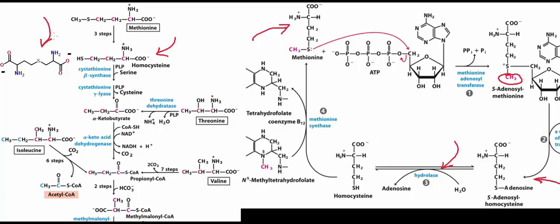Alpha-ketobutyrate is the convergence point between methionine catabolism and threonine catabolism. Threonine catabolism begins with threonine dehydratase — keep in mind we've already seen one mode of threonine catabolism in a previous video involving threonine dehydrogenase; make sure you can distinguish between the two. Threonine dehydratase specifically converts threonine to alpha-ketobutyrate. Alpha-ketobutyrate is an alpha-keto acid, which will be important in a moment. Threonine dehydratase is a pyridoxal phosphate-dependent enzyme; in the first step of its mechanism, it kicks off water from the hydroxyl group.